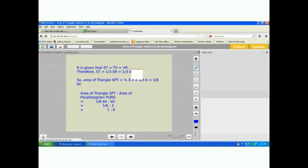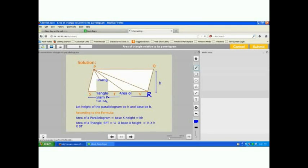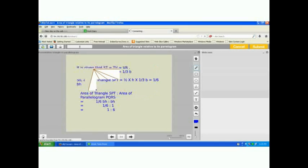It is given that ST is equal to TV is equal to VR, which I have already marked in the figure. Therefore, ST is one-third of SR or one-third of B. It is one-third of the base.